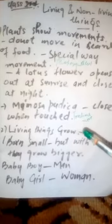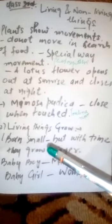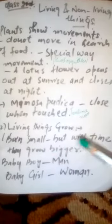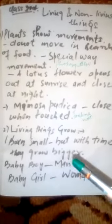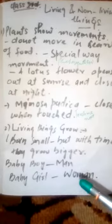Another feature of living things is that living things grow. For example, human beings are born small, but with time they grow bigger and bigger. A baby boy grows bigger and bigger and finally becomes a man. Similarly, a baby girl is born smaller and with time she grows and becomes a woman.